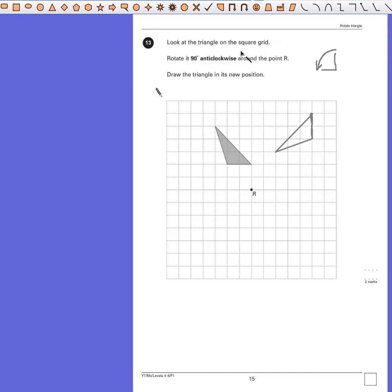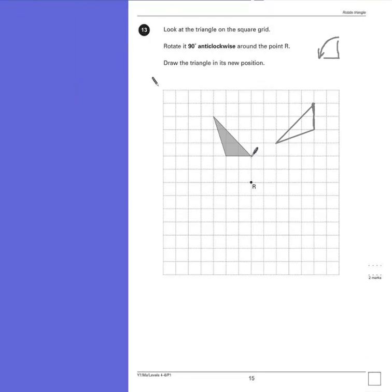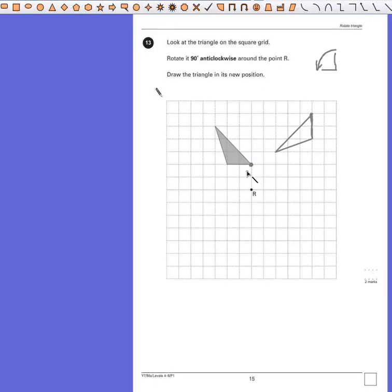Unfortunately it does tell us that we have to rotate around point R. And what that tells us is that if we imagined this point here to be like on a clock pointing to the number 12, and R is the middle of the clock,